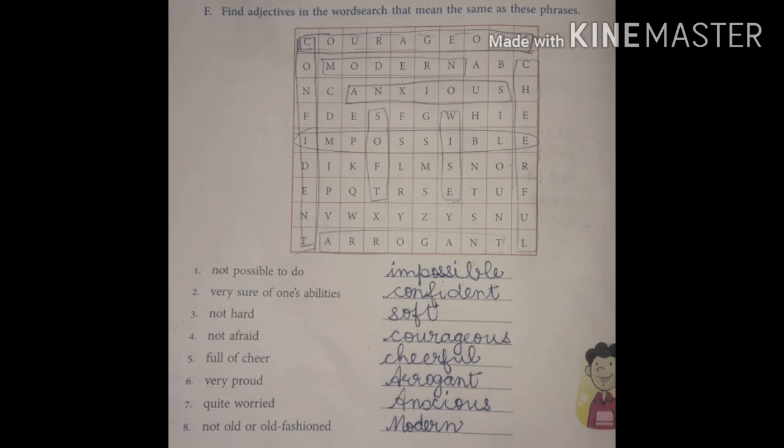Not possible to do - the word is impossible. Second one, very sure of one's ability - that word is confident. Third word, not hard - that means soft.